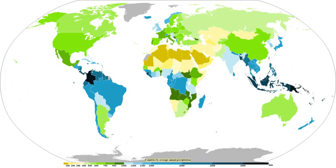As these larger water droplets descend, coalescence continues, so that drops become heavy enough to overcome air resistance and fall as rain. Raindrops have sizes ranging from 0.1 mm to 9 mm mean diameter, above which they tend to break up. Smaller drops are called cloud droplets and their shape is spherical. As a raindrop increases in size, its shape becomes more oblate, with its largest cross section facing the oncoming airflow. Contrary to cartoon pictures of raindrops, their shape does not resemble a teardrop.